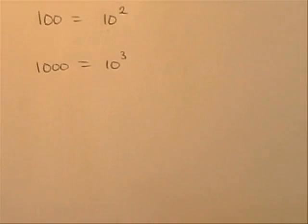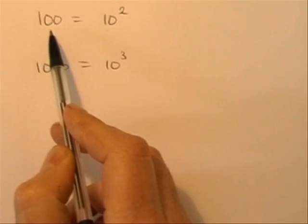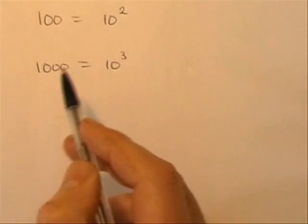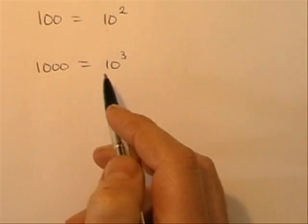Before we start using logs it's useful to remind ourselves what they are. We should know you can write a number as another number to a power. So to use easy examples, the number 100 could be written as 10 to the power of 2. And the number 1000 could be written as 10 to the power of 3.